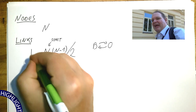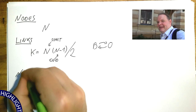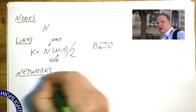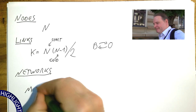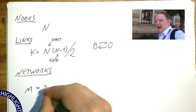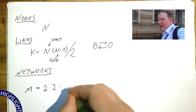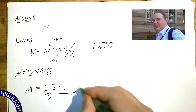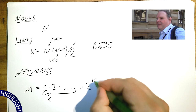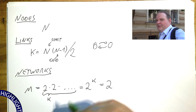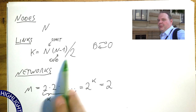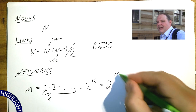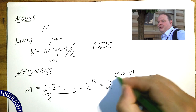Let's call this number of links k. For each of these k links, we have the option to build it or not to build it — two options for each of the k links. Things again multiply, and that means the total number of outcomes is two to the k. If we put k in, we find that the total number of different networks that we can construct between n labeled nodes is two to the power of n times (n minus one) divided by two.